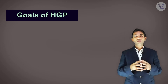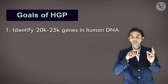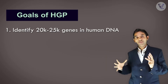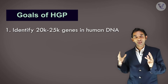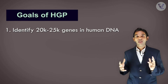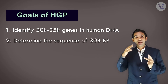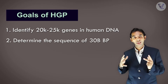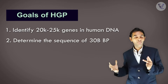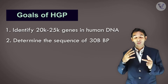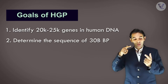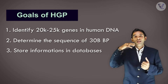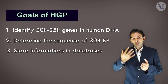There are also certain goals of the HGP. The first goal was to identify all the approximate 20,000 to 25,000 genes present in the human genome. The second goal was to determine the sequences of about 3 billion base pairs.